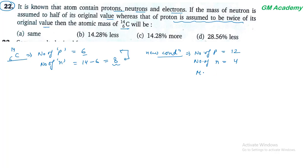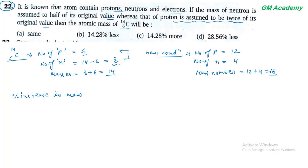New mass number = 12 + 4 = 16. Original total mass = 8 + 6 = 14. Increment = 2 units. Percentage increase in mass = (16 − 14) / 14 × 100 = 2/14 × 100 = 14.28%, जो कि more होगी। Option C correct answer हो जाएगा।